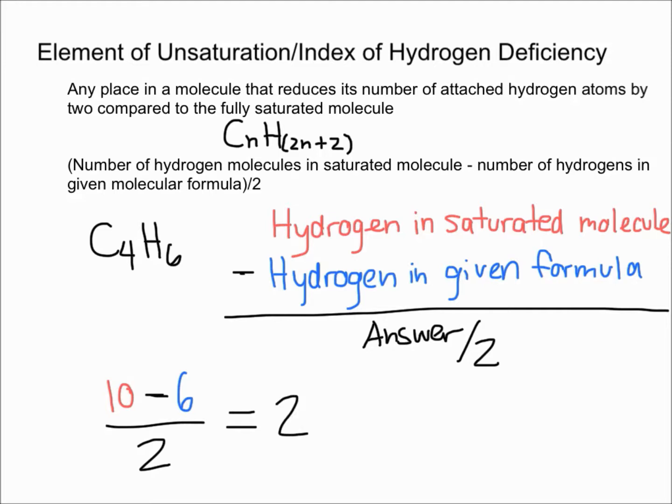This means you have two index of hydrogen deficiencies, also known as two elements of unsaturation.